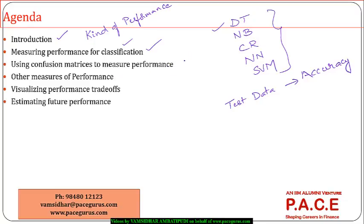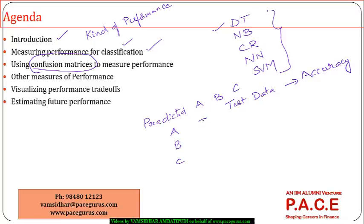But we want to look at something more — we want to extend this to really do a thorough evaluation of the performance of the model. So, using the confusion matrix, which is a table where we have the predicted values on one side — say, groups A, B, C are predicted — and the actuals are on the other side — actual A, B, C. We are looking at how many of them are falling here, how many are actually B but have been predicted as A, and so on. This kind of matrix is what we call the confusion matrix. We can create confusion matrices using the table command or the crosstable command.